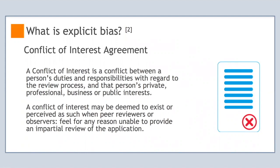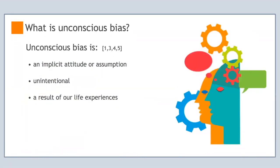For this reason, explicit bias will not be addressed during this training module. An unconscious bias is an implicit attitude, stereotype, motivation, or assumption that can occur without an individual's knowledge, control, or intention.